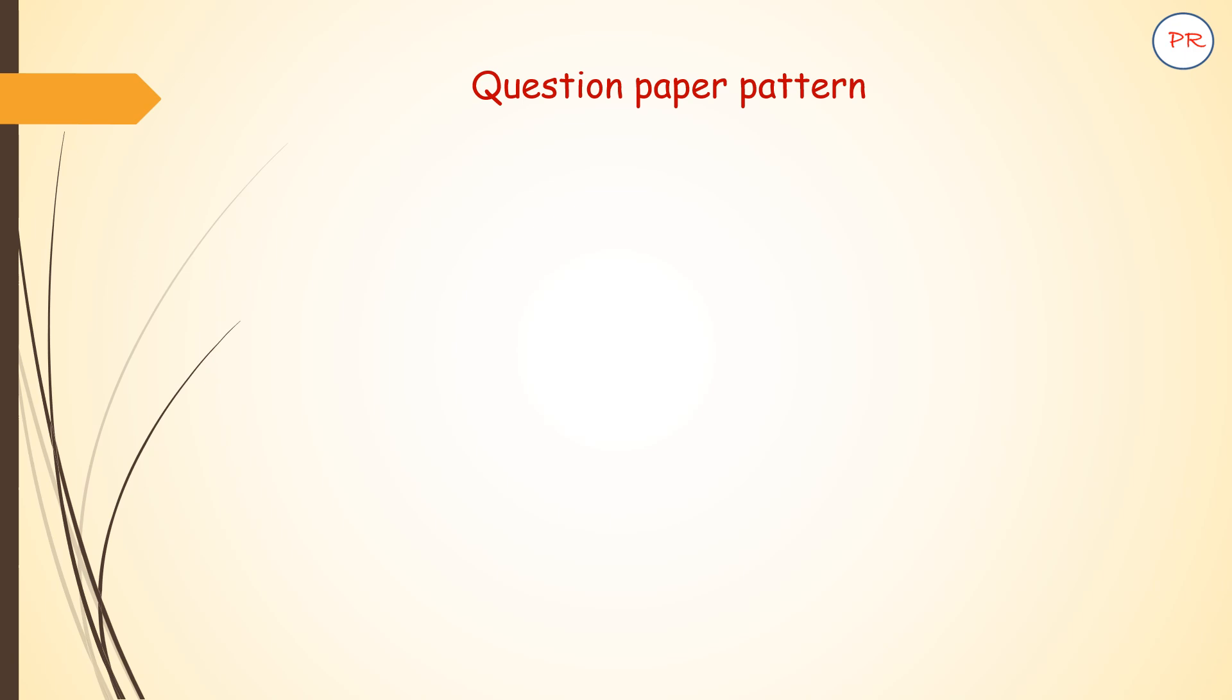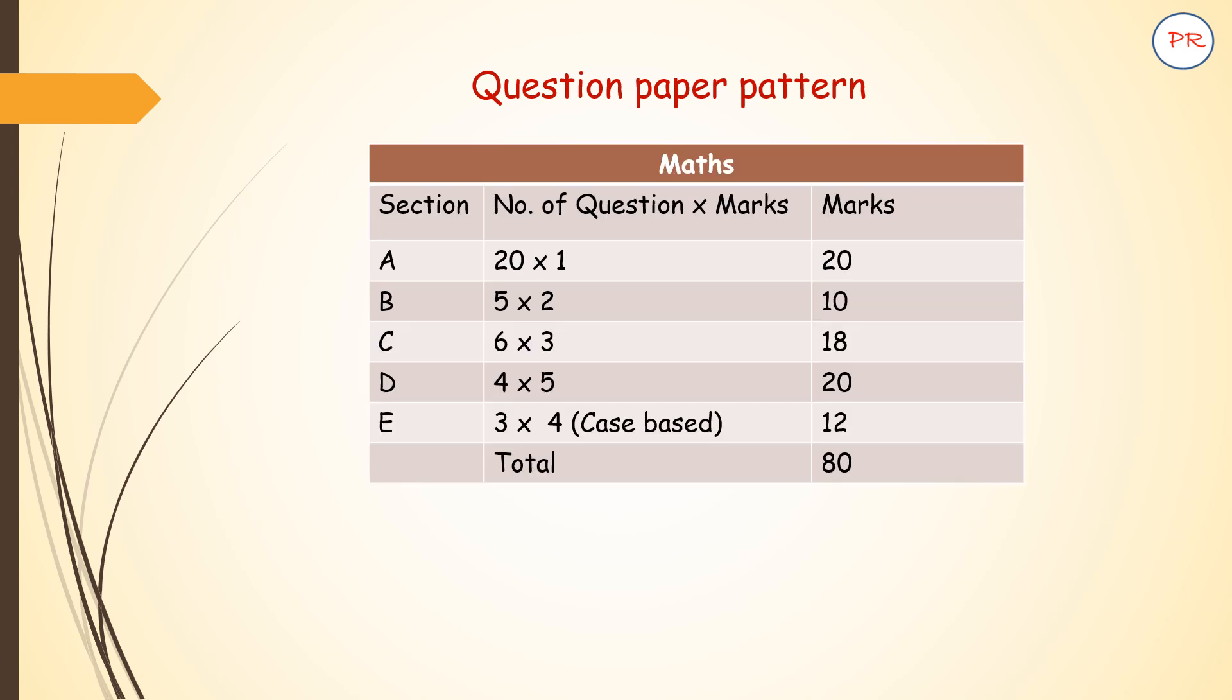Here is the question paper pattern for math subject. You can see it is divided into four sections. In section A, 20 multiple choice questions for one mark each will be asked. In section B, five questions for two marks will be asked. In C, six questions for three marks. In D, four questions for five marks. And in E, three questions for four marks each - this is for case based questions.